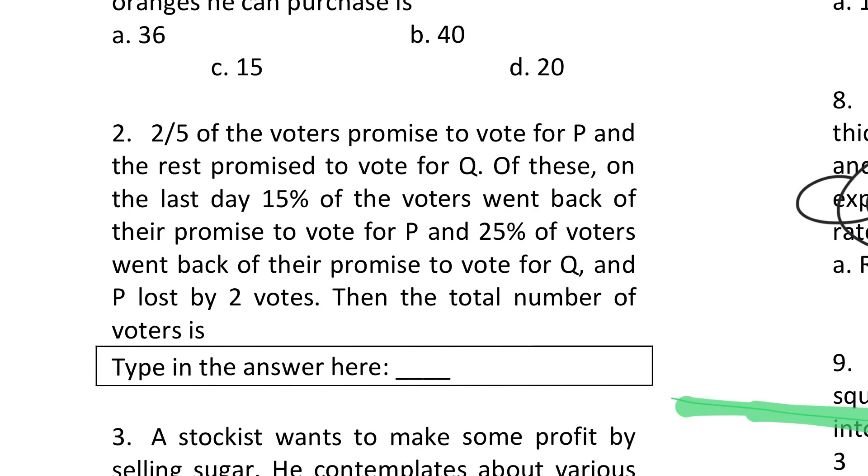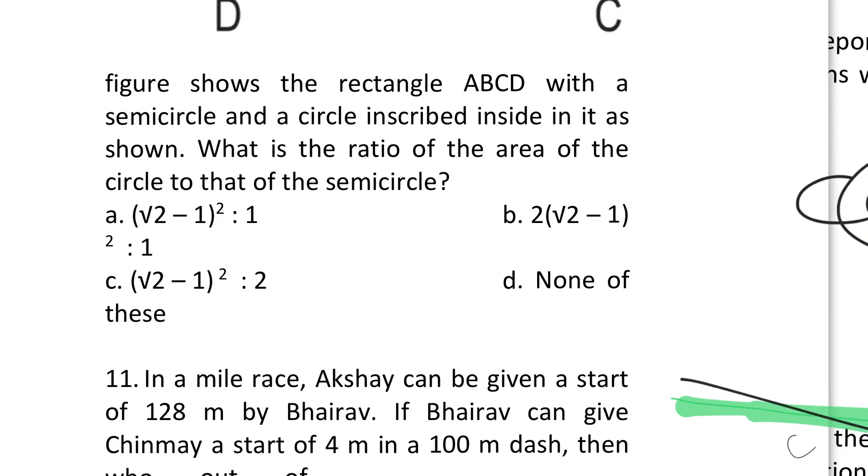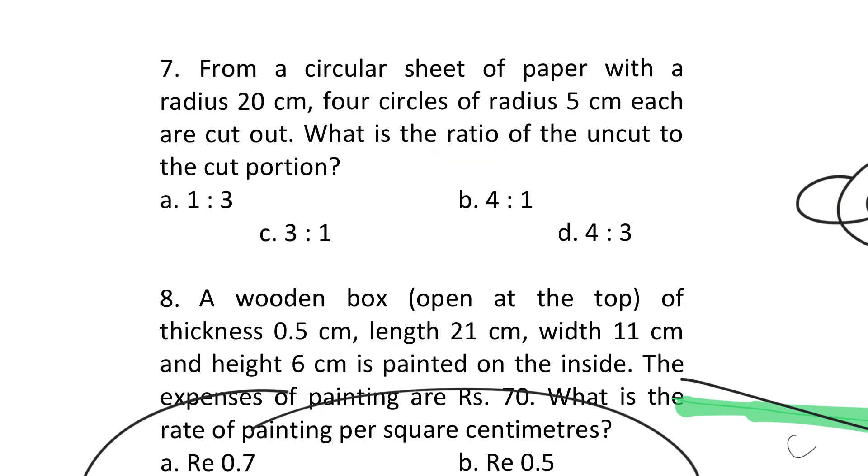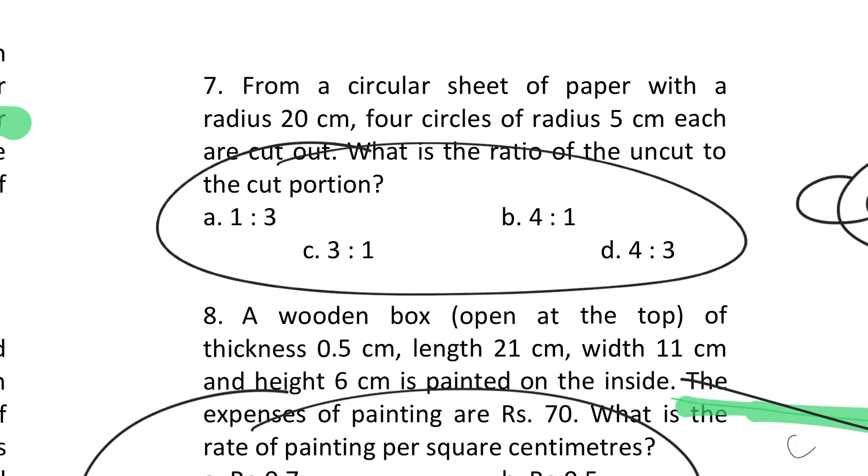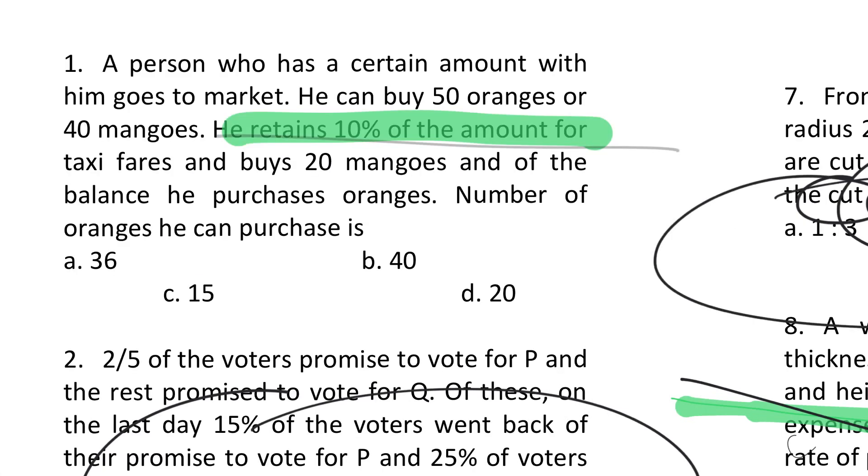At number nine we have theta-based questions - questions which do not have the options, type in the options. Around 10 questions out of 34 you can expect to be theta-based. The problem is we don't have the options so I don't know whether my answer is right or wrong. But the best part is the options are going to be straightforward. I cannot give you complex options like root 2 minus 1 whole square. I have to give you simple options like 36, 15, 20, 40. So unintentionally I'm going to make the question look simple.